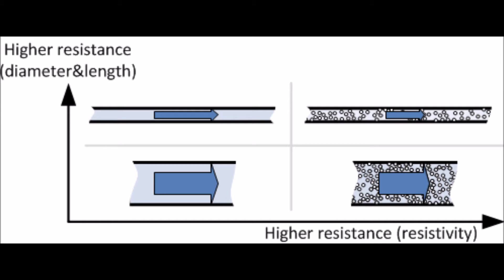Obviously in electrical terms we don't have hair and dirt, but we do have electrons and the makeup of the material that can cause resistance. We also talked about diameter, but we can also talk about length, which is the third source of resistance. The length of the wire in electrical terms can also greatly increase the resistance.